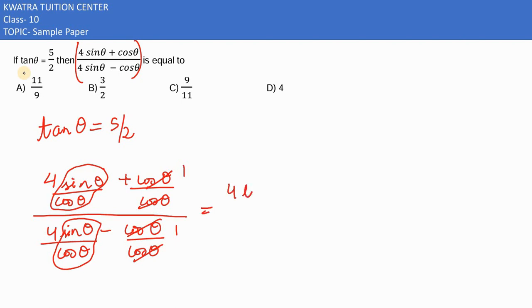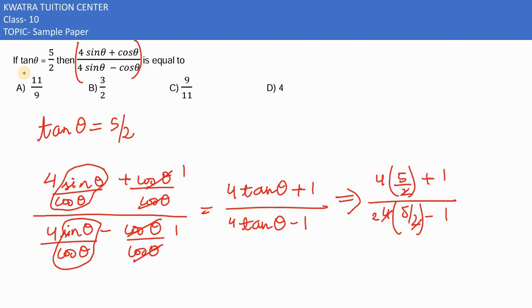It would become 4 tan theta plus 1, and down here is 4 tan theta minus 1. So our tan theta will come into use. So 4 times 5 by 2 plus 1, then 4 times 5 by 2 minus 1.